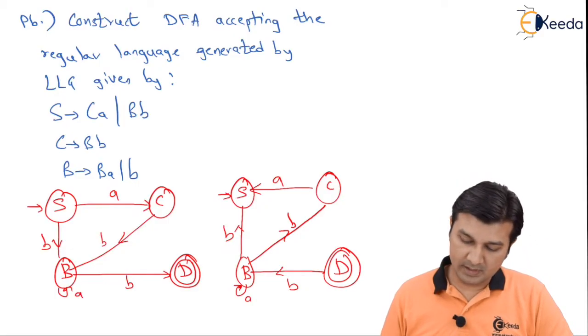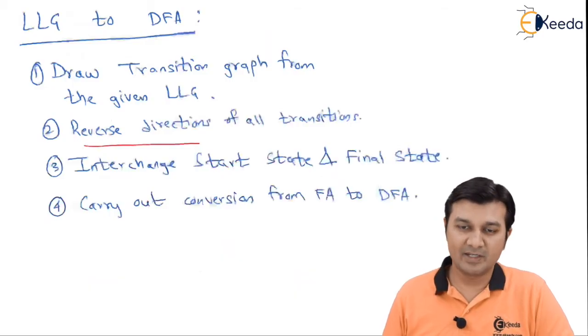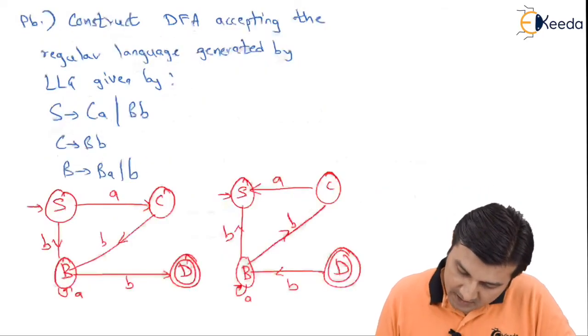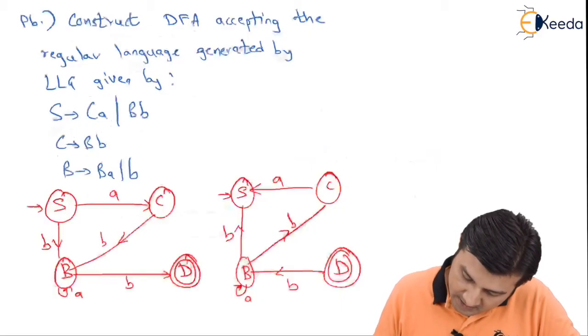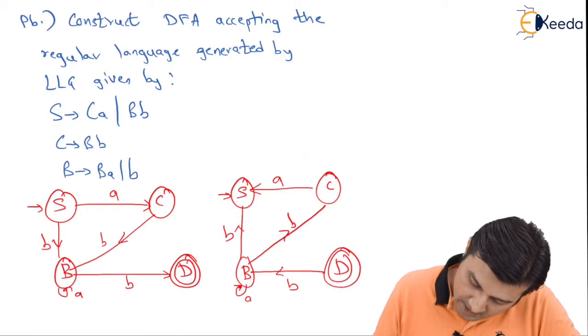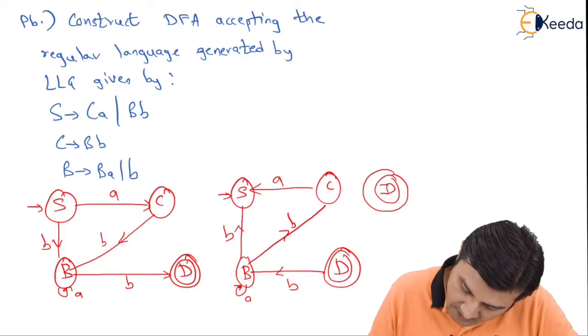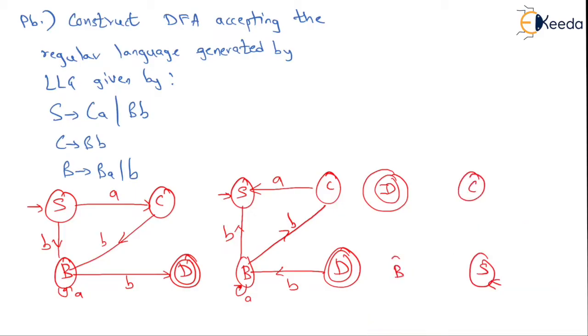The next step says interchange the start state and the final state. So after interchanging, I see that my D's position will be taken by S and that will become the start state, and S position will in turn be taken by D which becomes the final state. My C remains as it is, my B remains as it is and we rewrite all the transitions: this is A, this is B, that is also a B, that is my A and that is my B. So that completes it.